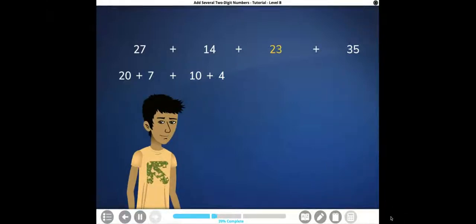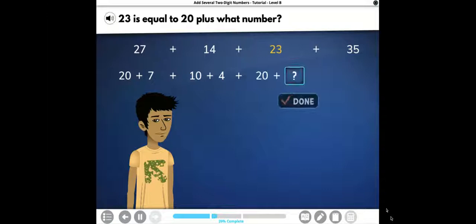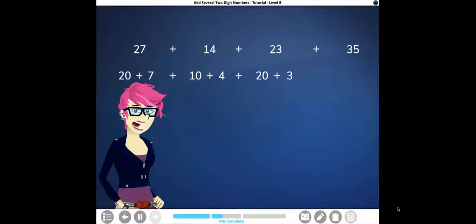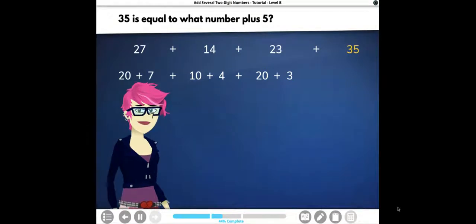Write 23 in expanded form. 23 is equal to 20 plus what number? So if we have 23 broken down into expanded form, we have 20 plus what number's in our ones column? 3. Now write 35 in expanded form. 35 is equal to what number plus 5? So they gave us the ones first. We have to figure out the tens. Well, how many tens does 35 have? It has three tens, which is equal to 30.